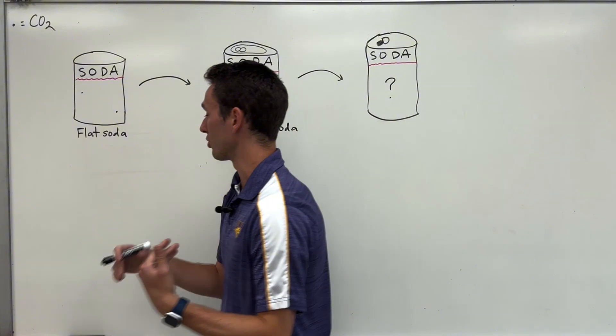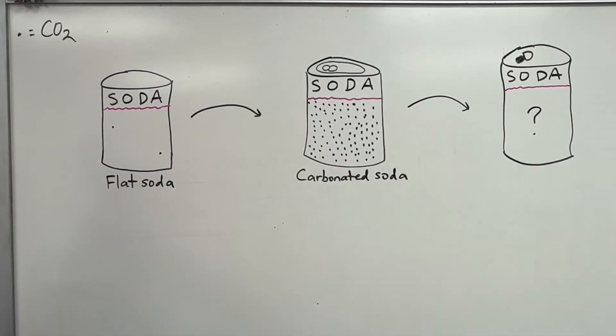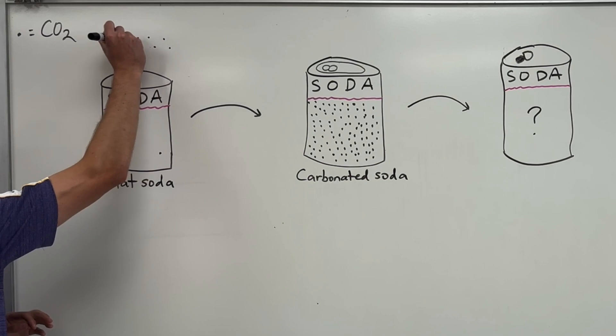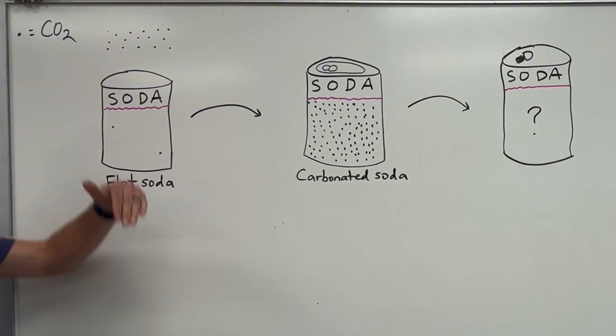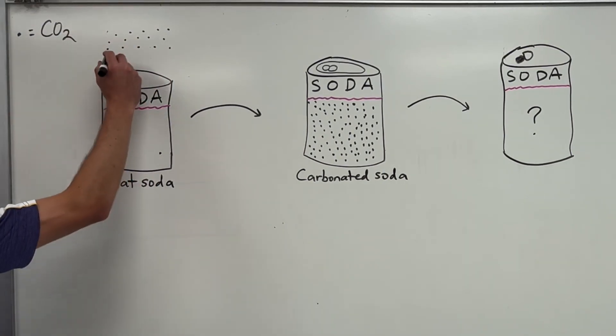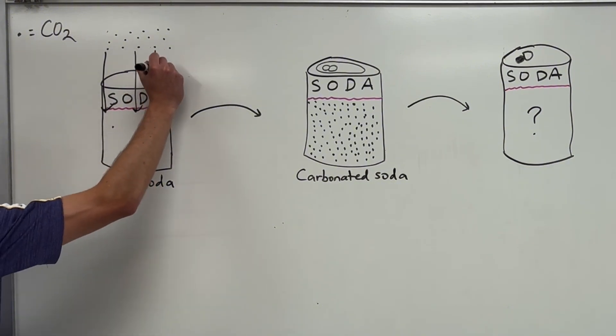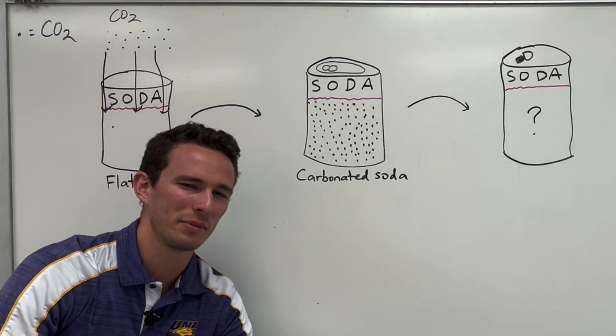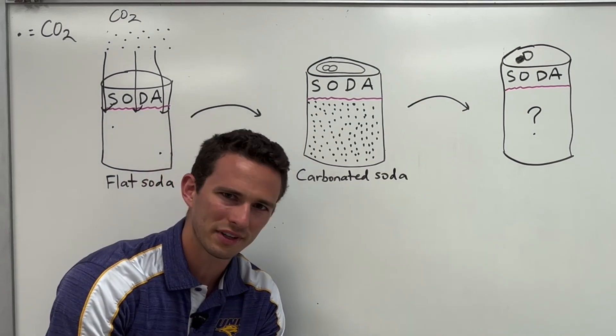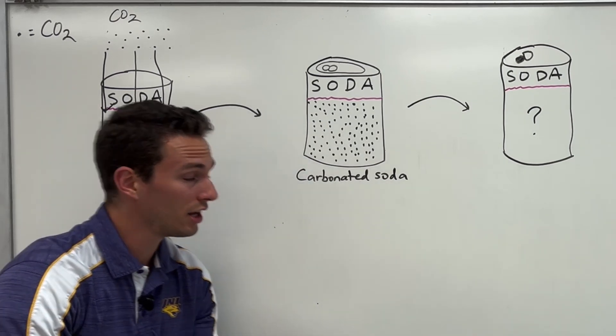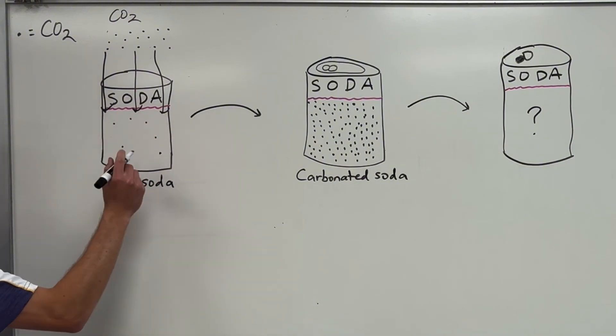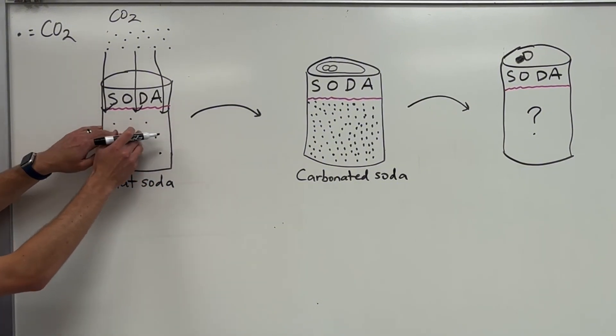So what our manufacturers do is they take this flat soda with all the sugar, and they take a lot of carbon dioxide in a tank and force it into the soda under a lot of pressure. They pressurize this gas of carbon dioxide and force it into the liquid. Now this is abnormal because usually gases don't like to dissolve in liquids, it's really difficult for them to do that, but under enough pressure, the gas can actually begin to dissolve and associate within the fluid itself.